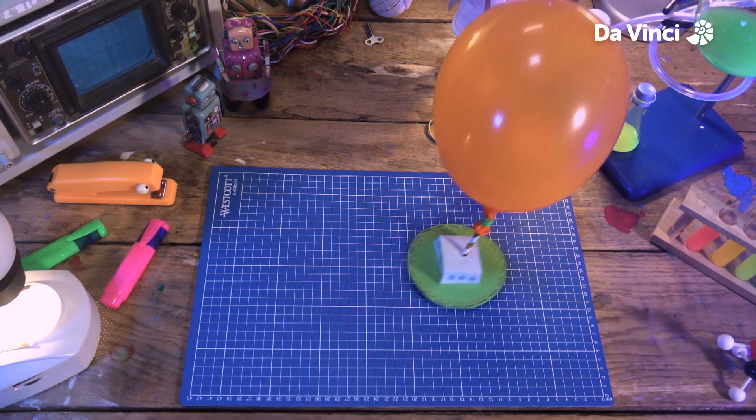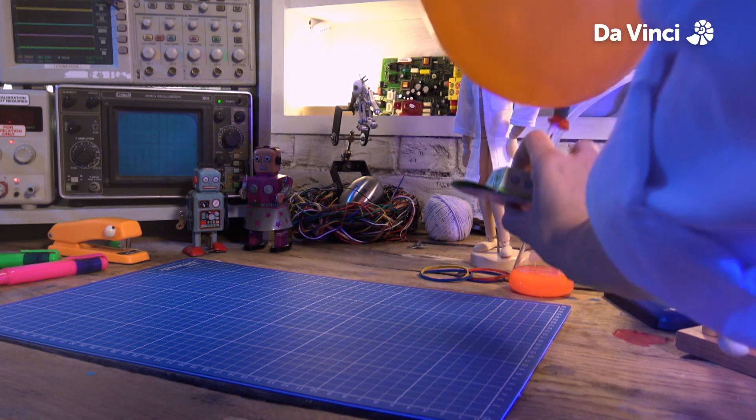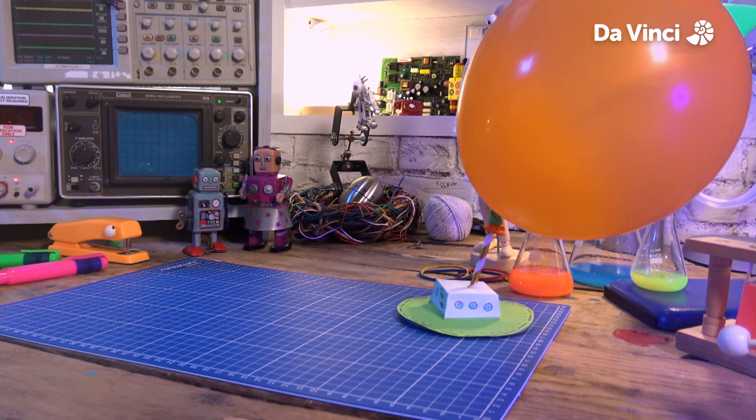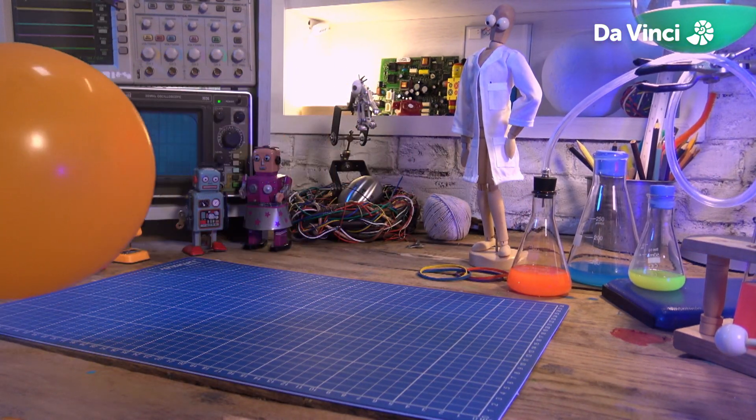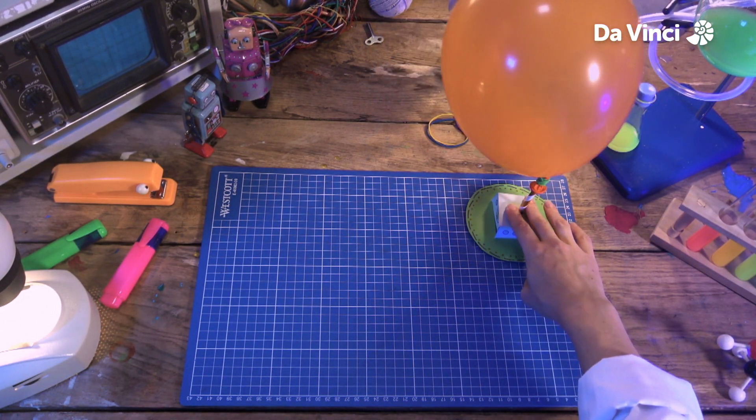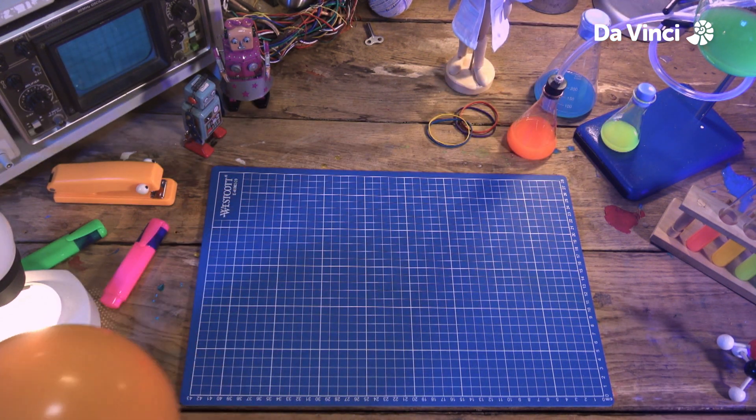Our hovercraft can't move very far on its own because of a force called friction. The bottom of the craft rubs against the table, which builds up friction and slows it down. However, when the air is released from the balloon, the hovercraft is lifted slightly, reducing the friction and allowing it to move more freely. This is how a hovercraft moves on water.